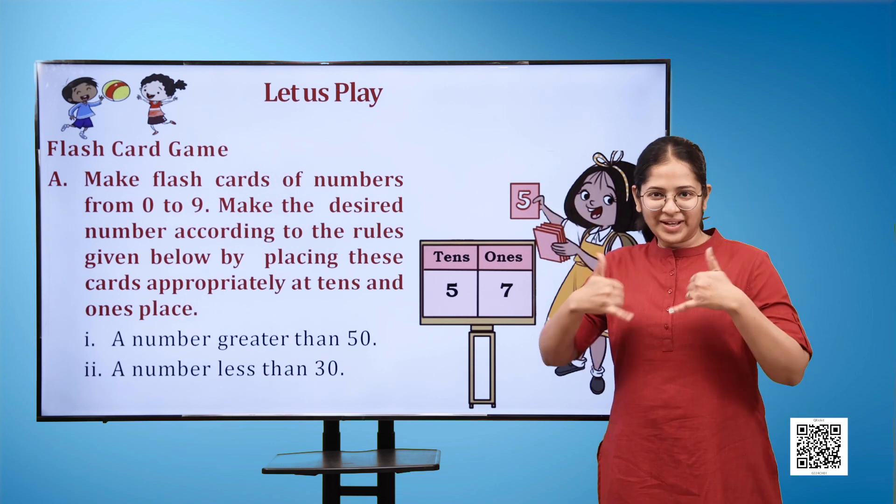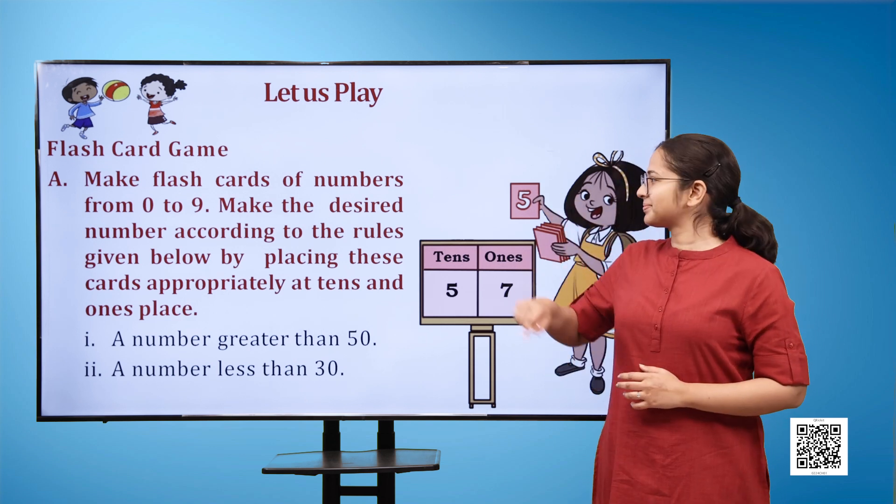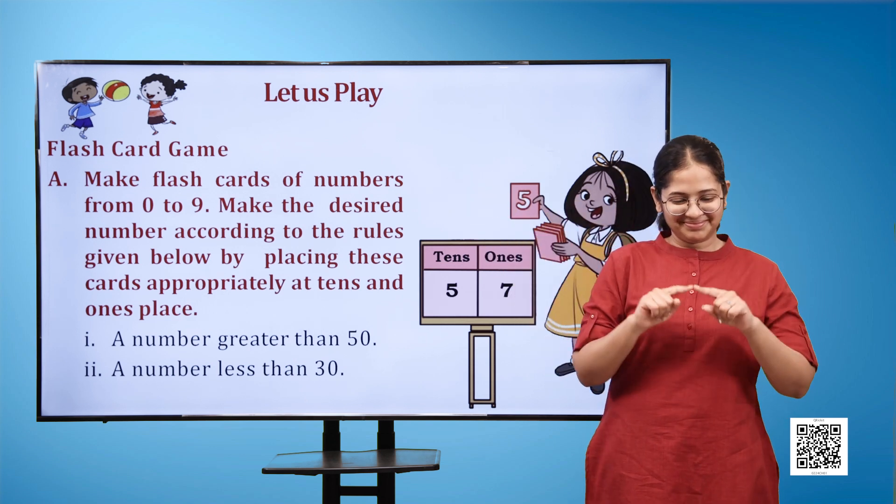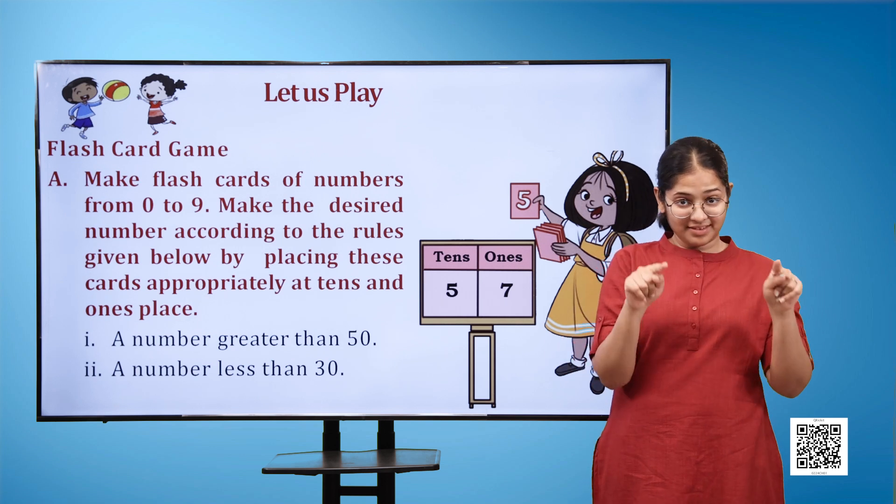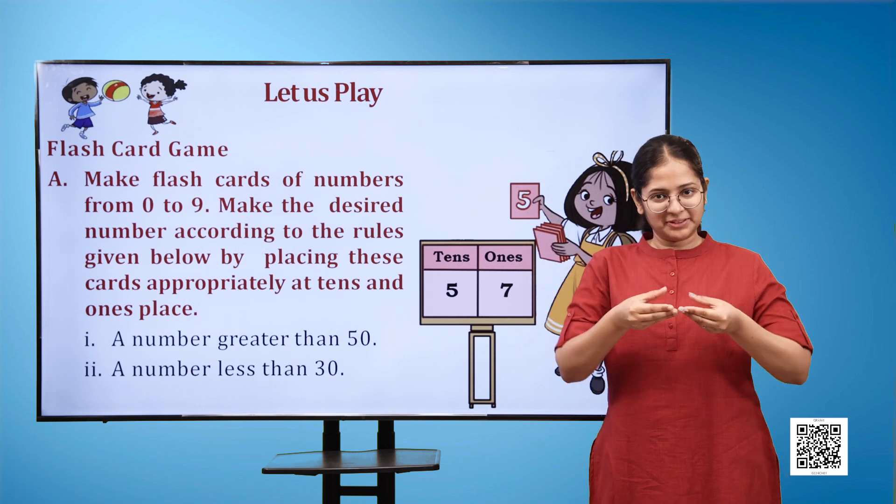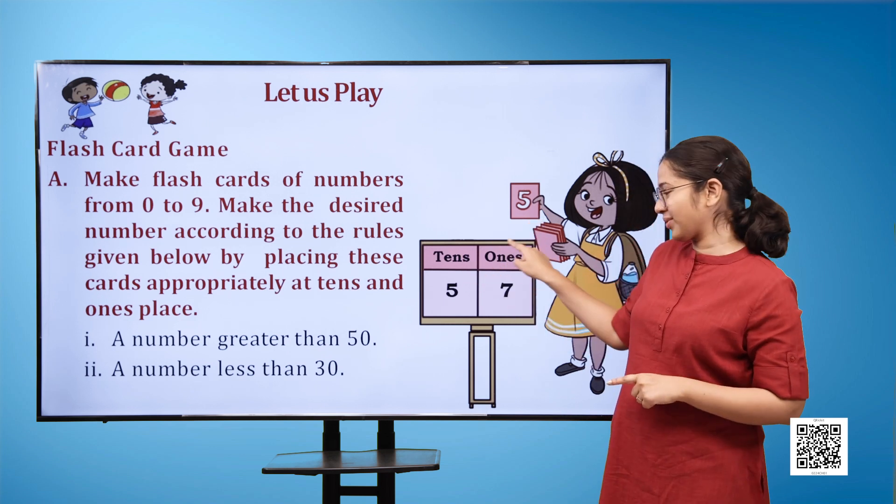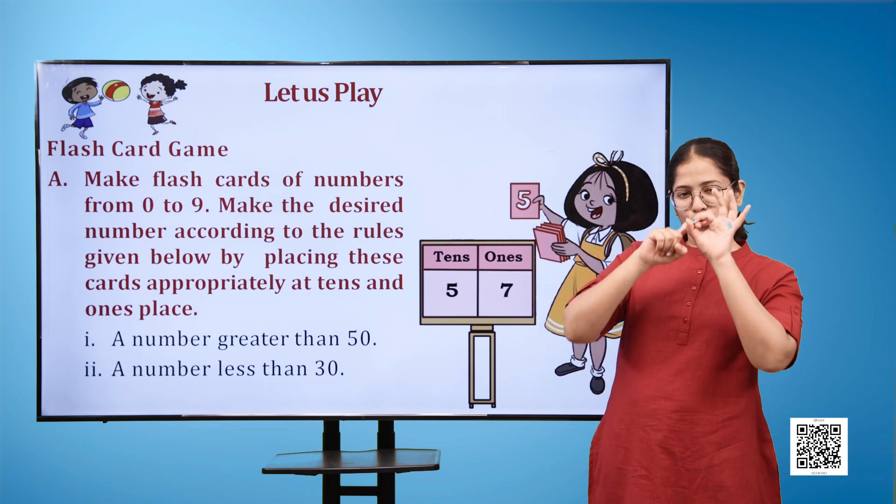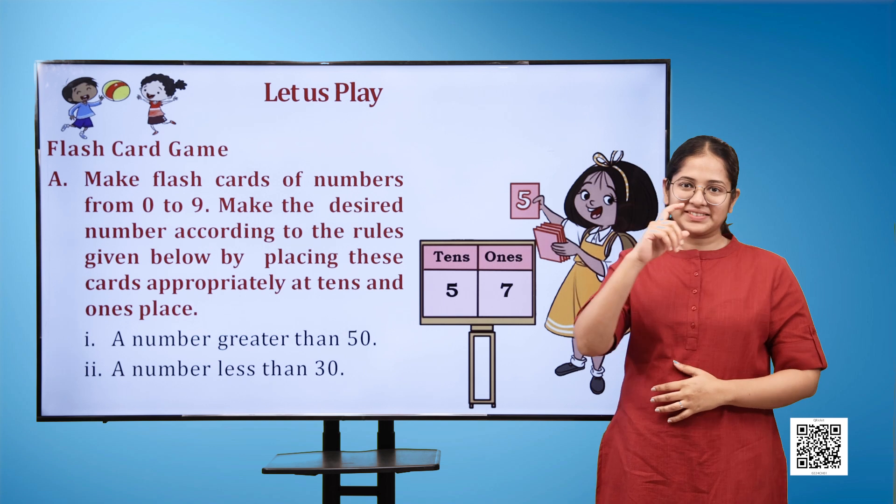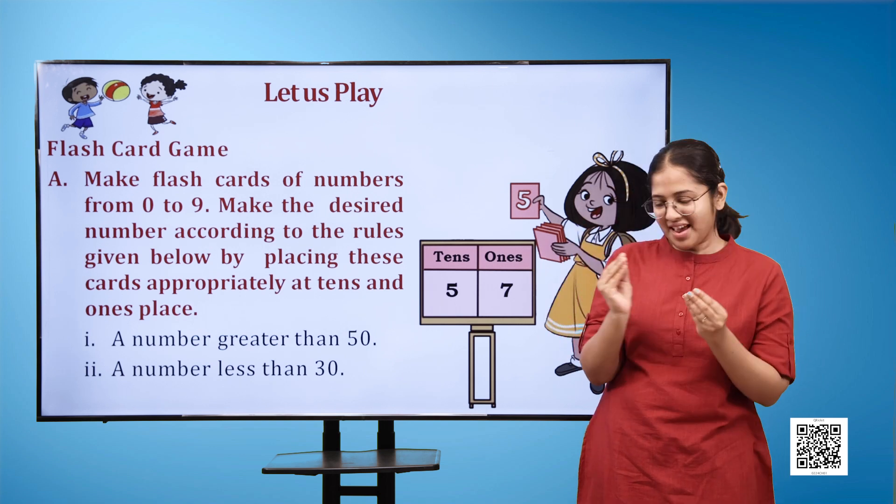Let us play. Flash Card Game A. Here we also see an image where a girl is standing next to a board. The board has two columns. The first one is of tens and the second one is for ones. Under the tens we can see five and under the ones we can see seven.